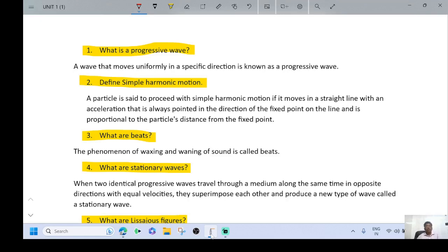A wave that moves uniformly in a specific direction is known as a progressive wave. Y equal to A sin omega into t minus x by v. This is an equation used to represent a progressive wave.